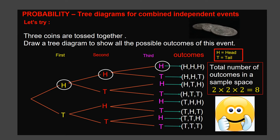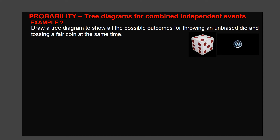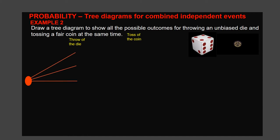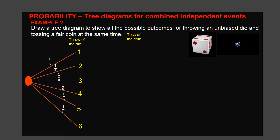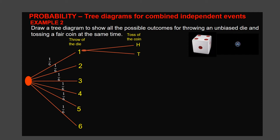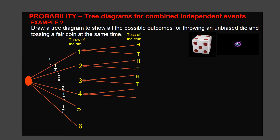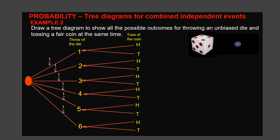Example 2: Draw a tree diagram to show all the possible outcomes for throwing an unbiased die and tossing a fair coin at the same time. For throwing a die, you have six possibilities. Draw six lines from this dot, then write the outcomes at the end of each branch: 1, 2, 3, 4, 5, 6. Since it's an unbiased die, the probability of getting each outcome is 1 over 6. Write the probability on each branch. For tossing a coin, we have two possibilities. Draw a double branch, label two ends: H for head, T for tail. Repeat the same step to complete the tree diagram. Since it's a fair coin, the probability is 1 over 2.